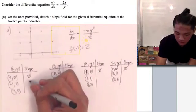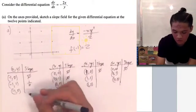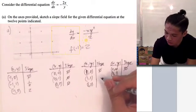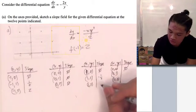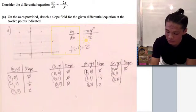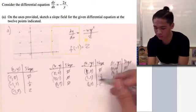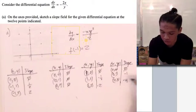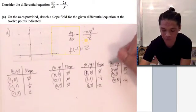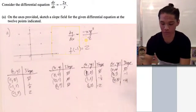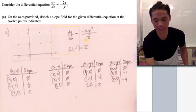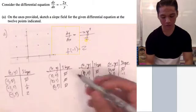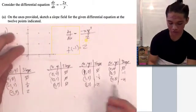At negative 1 comma 1, the slope is 1 half. At negative 1 comma 2, the slope is negative 2. At 1 comma 1, it's negative 1 half. At 1 comma 2, it's negative 2. At 2 comma 1, the slope is negative 1. At 2 comma 2, the slope is negative 4. We're just plugging in each value of x and y into our differential equation to find these slopes.